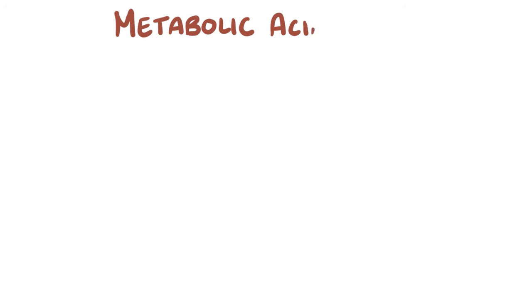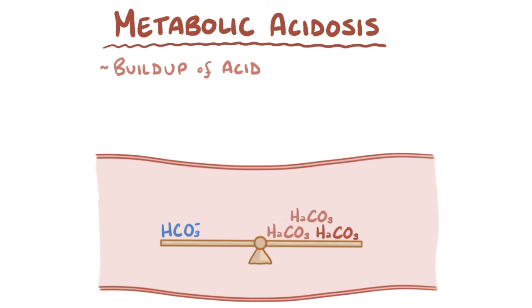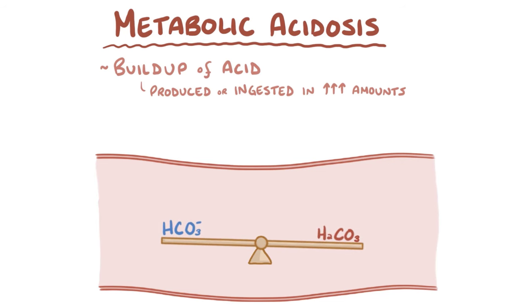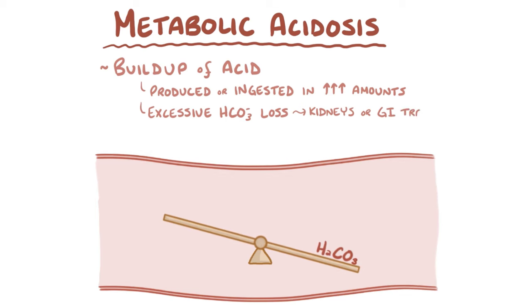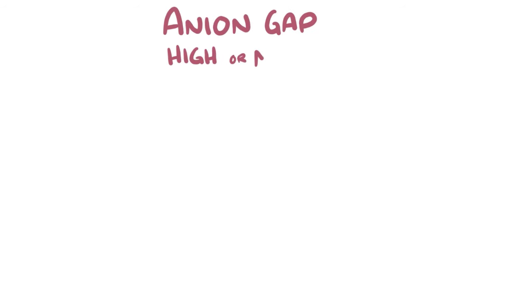Metabolic acidosis arises either from a buildup of acid in our blood — which could be because it is produced or ingested in increased amounts, or because the body can't get rid of it — or from excessive bicarbonate loss from the kidneys or gastrointestinal tract. The main problem is that they lead to a primary decrease in the concentration of bicarbonate in the blood. This can be broken down into two categories based on whether the anion gap is high or normal.